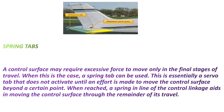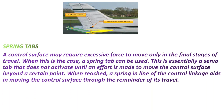A control surface may require excessive force to move only in the final stages of travel. When this is the case, a spring tab can be used. This is essentially a servo tab that does not activate until an effort is made to move the control surface beyond a certain point. When reached, a spring in line of the control linkage aids in moving the control surface through the remainder of the travel.